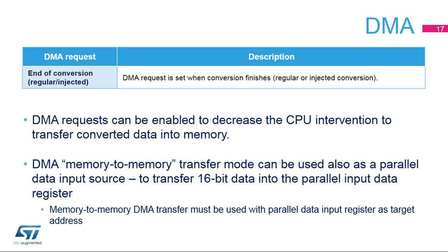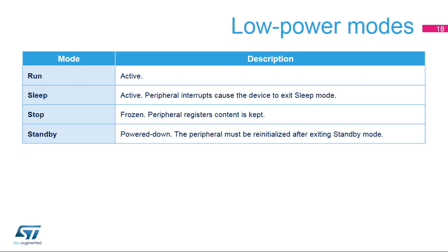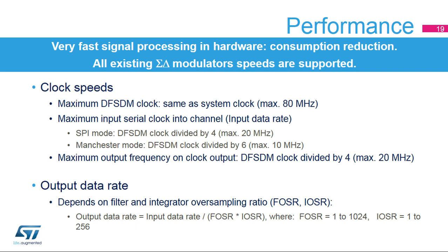The DMA controller can also be used for fast data transfers into parallel data registers, transferring data from a memory buffer into the parallel data register using memory-to-memory transfer mode, with the target address being the parallel input data register. The DFSDM peripheral is only active in run and sleep modes and must be disabled in stop and standby modes. Performance depends on the maximum input data rate: up to 20 MHz in SPI mode or 10 MHz in Manchester mode, with parallel data inputs also supporting full 20 MHz speed via CPU or DMA.